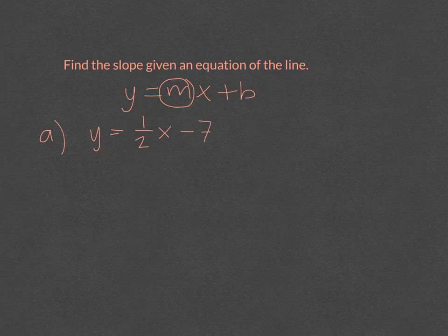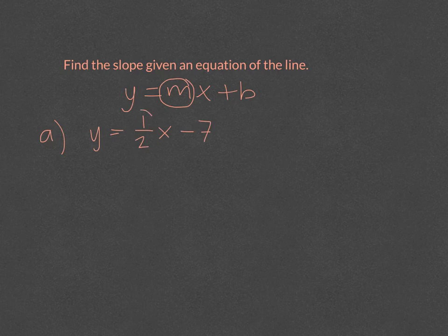So if I have y equals one-half x minus seven, and I want to find the slope of this line, there's literally no work you need to do for this. You just look at the value that's on the x, and your slope is one-half.